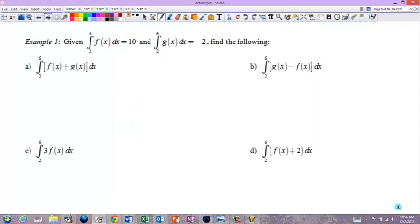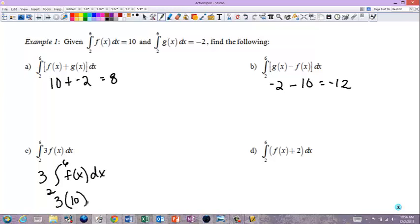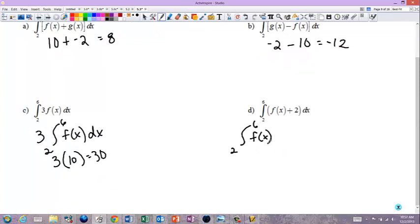It says given from 2 to 6 of f(x) equals 10 and from 2 to 6 of g(x) equals negative 2, find the following. Well, from 2 to 6 of f(x) plus g(x), you would just do 10 plus negative 2 and you would get 8. From 2 to 6 of g(x), negative 2 minus f(x), 10 would be negative 12. This is the same as 3, the integral from 2 to 6 of f(x). I can pull the 3 to the front, so it's just 3 times 10, which is 30. And then this one is trickier. This is the same as the integral from 2 to 6 of f(x) plus the integral from 2 to 6 of 2. This one is 10. This one I have to figure out. The integral from 2 to 6 of 2. Well, 2 is a straight line, so the distance here is 4 times 2. This is a rectangle with area 8, so 10 plus 8 is 18.